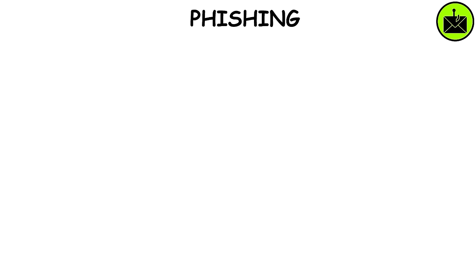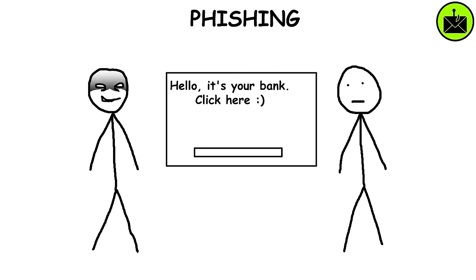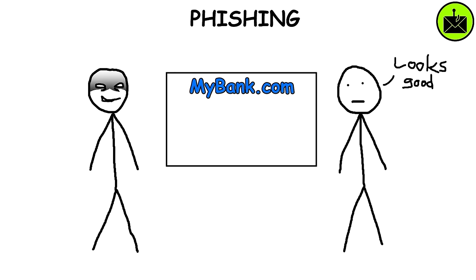Phishing. It's a scam where attackers deceive people into revealing sensitive information or installing malware. Most of the time it's done by email, where the attacker acts as a reputable source, such as your bank, and sends the victim to a website that completely mirrors the real one.